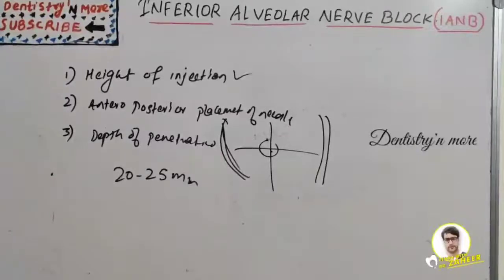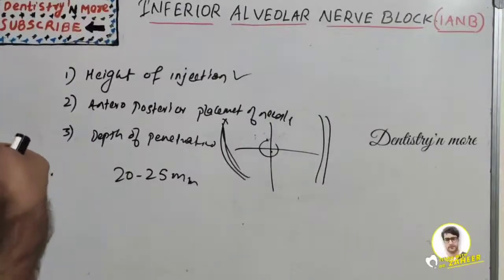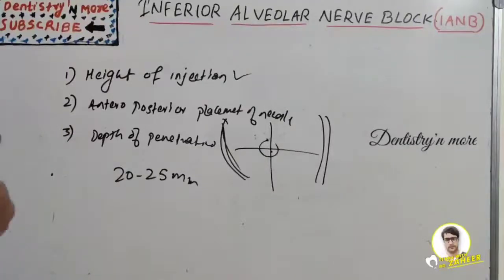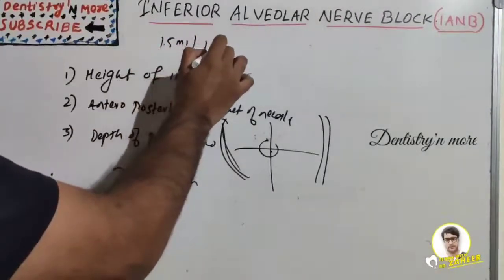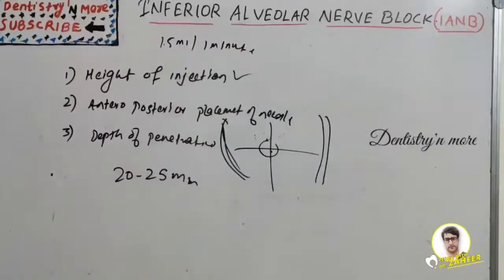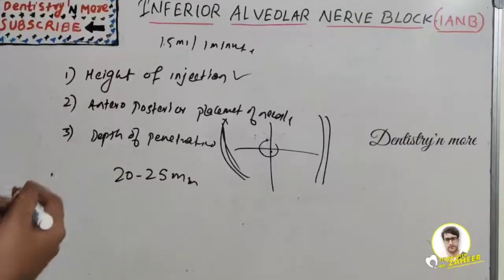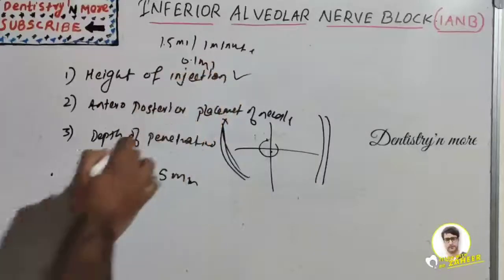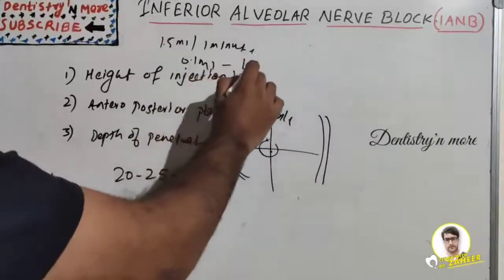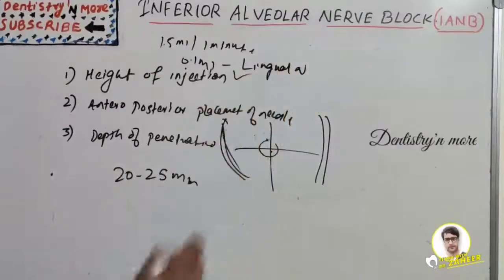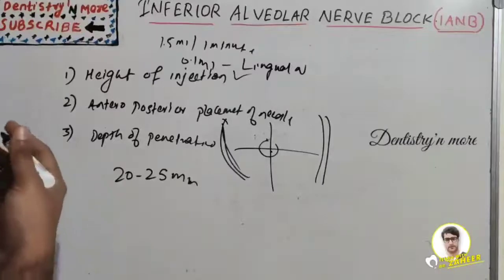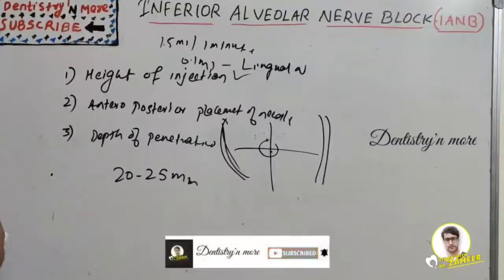When bone is contacted, withdraw approximately one millimeter to prevent subperiosteal injection, then aspirate. If aspiration is negative, slowly deposit 1.5 ml of anesthetic over 60 seconds. Slowly withdraw the syringe, and when approximately half its length remains within the tissue, re-aspirate. If negative, deposit approximately 0.1 ml of the remaining solution to anesthetize the lingual nerve.